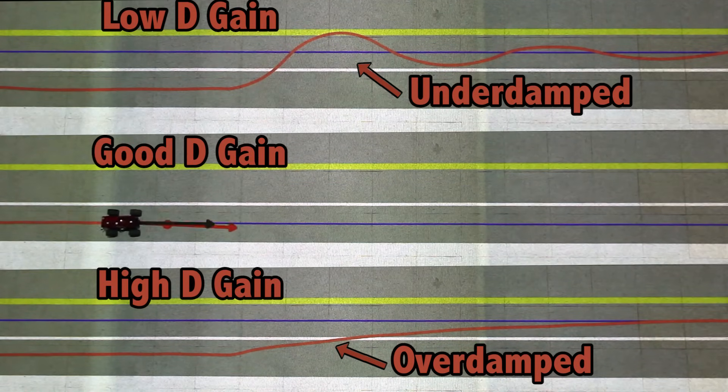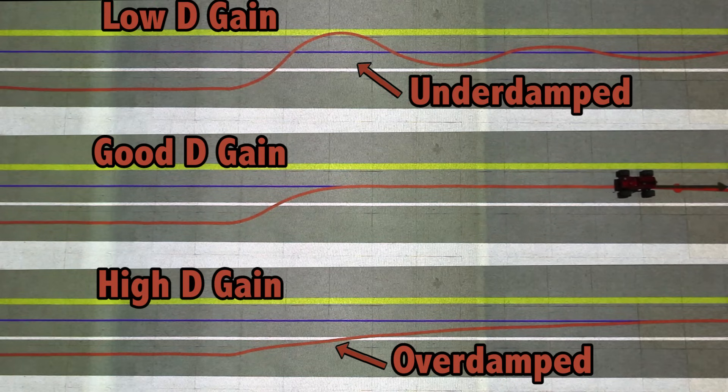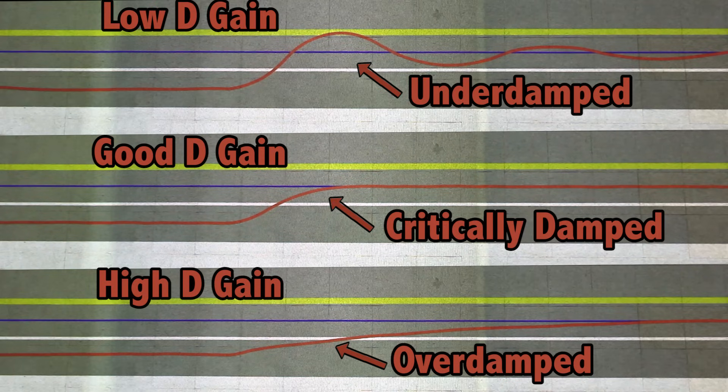Properly choosing the derivative gain allows the car to approach the desired trajectory quickly with a cross-track error rate close to zero. This is called being critically damped. Despite the success so far, for a complete controller, we're not done yet.